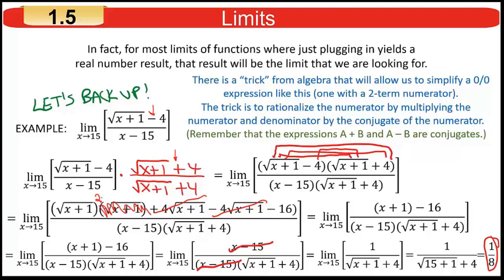Now there's no reason you can't just plug 15 in. When you do, the square root of 15 plus 1 is the square root of 16, which is 4. Then 4 plus 4 is 8, giving the answer 1/8. Most of the time you can just plug in; sometimes you need a bit of factoring and canceling; and then once in a while you have to work a little harder like here — but not that often.